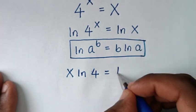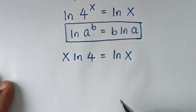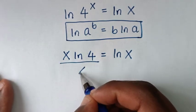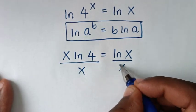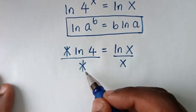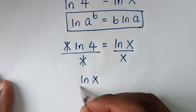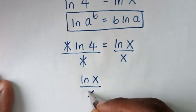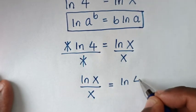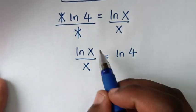This is equal to ln of x. Then we move x to one side, so we'll divide both sides by x. This x will cancel that x, giving us ln(x) over x is equal to ln(4).